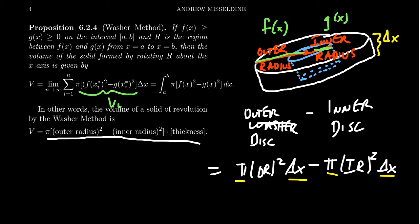We add these together to give an approximation of the volume of the entire solid of revolution. And to improve the approximation, we take more and more slices, more and more cross sections, taking the limit as n goes to infinity. This gives us the integral from a to b pi times f of x squared minus g of x squared dx.